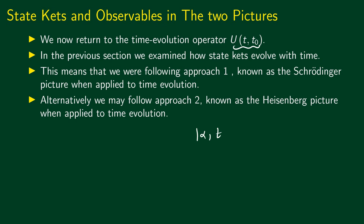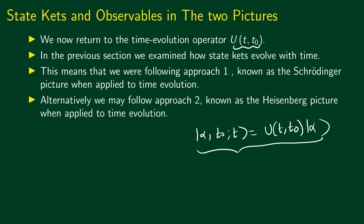When we discussed time evolution, we said that states change according to this relation — the state at a later time is given by the effect of the unitary time evolution operator on the initial ket. So here we talked about the change of state kets under time evolution, meaning we were following approach 1, since we didn't say anything about the change of operators. Only states change with time. This approach 1 is known as the Schrödinger picture. Alternatively, we may follow approach 2 to time evolution, which is known as the Heisenberg picture.